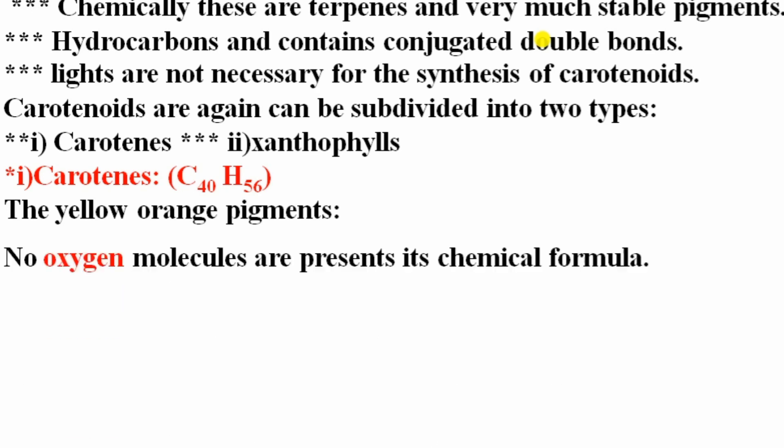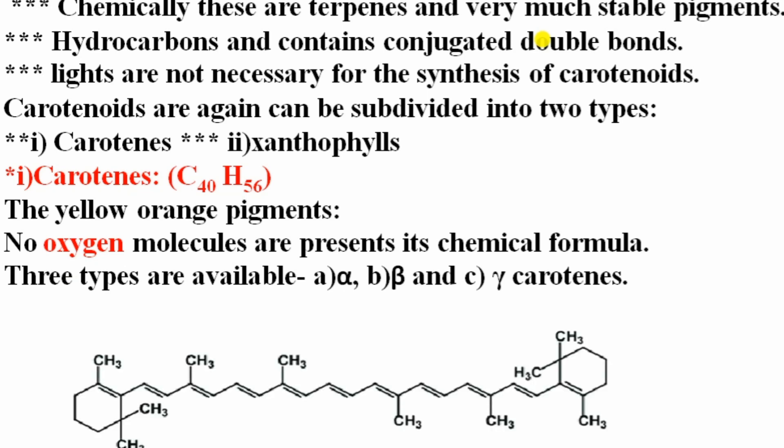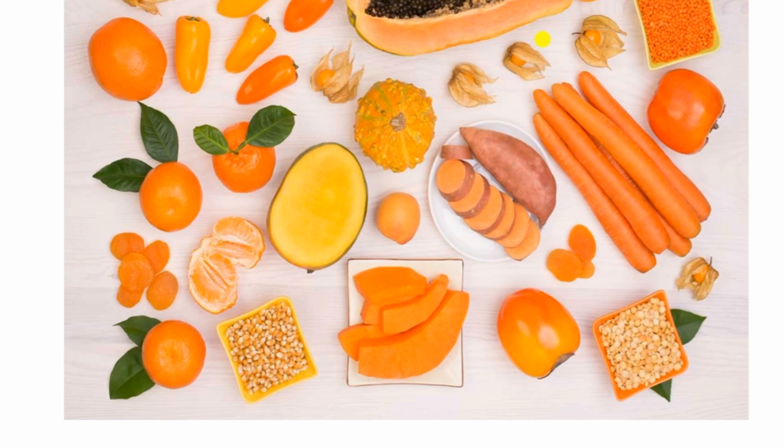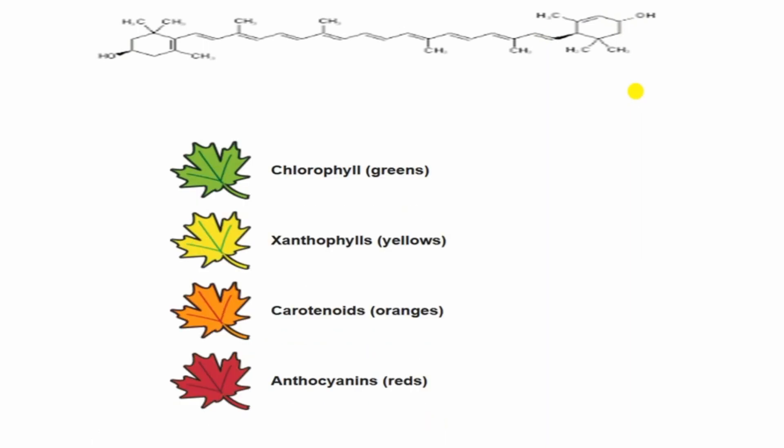Carotenoids are subdivided into two types: carotene and xanthophyll. Carotene contains no oxygen molecule — formula C₄₀H₅₆, yellow-orange in color — and has alpha, beta, and gamma forms. Beta-carotene is the direct precursor of vitamin A and structurally resembles terpenes. Xanthophyll contains one oxygen molecule — C₄₀H₅₆O — and lutein is the common form found in plants. Xanthophylls are responsible for the autumn color of leaves. Summary: chlorophyll is green, xanthophyll is yellow, carotene is orange, and anthocyanin is red.